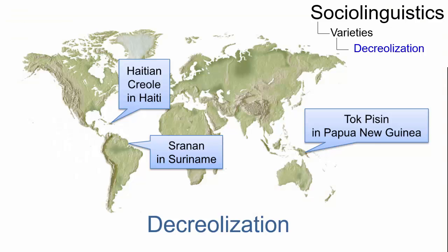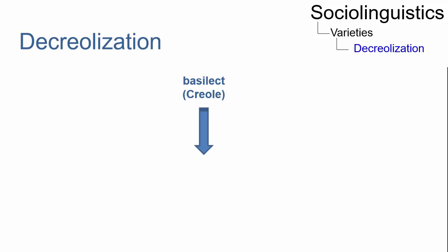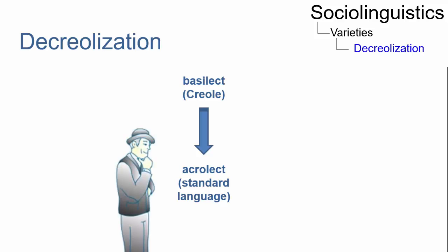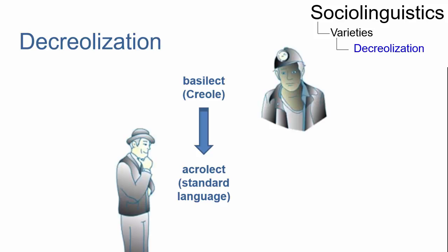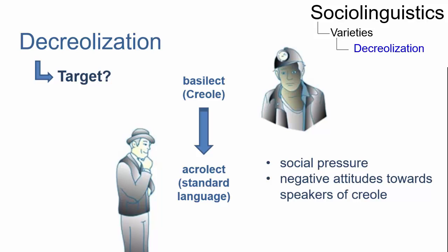The term decreolization describes a process in which a Creole language gradually loses its basilectal or Creole features and becomes more similar to the acrolect, or the standard language from which it is derived. The speakers alter the language in the direction of the acrolect, which is generally associated with prestige and a higher social status. The target of decreolization, however, remains unclear among scholars, but it is thought to be due to social pressure and negative attitudes towards speakers of the Creole language.